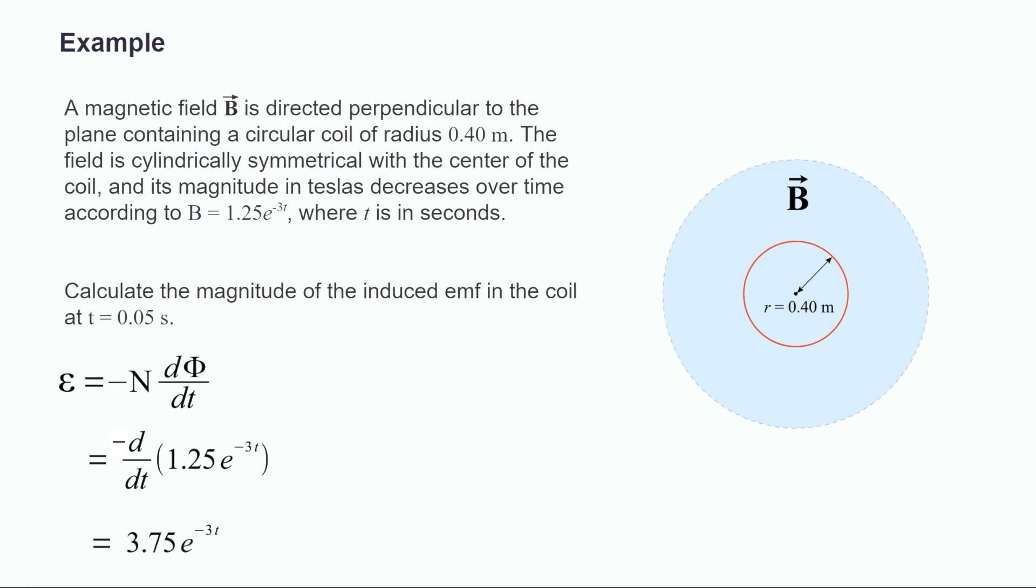Our next step is to take the derivative of the equation for the magnitude of the electric field with respect to t, which equals 3.75 times e to the power of negative 3t. n equals 1, so that's why you don't see it incorporated into the derivative.